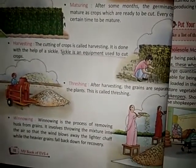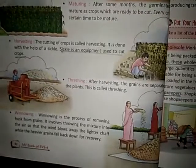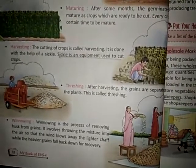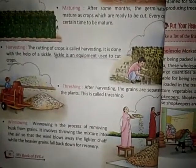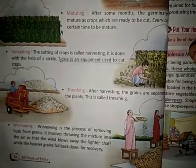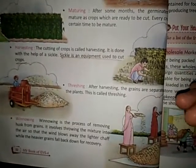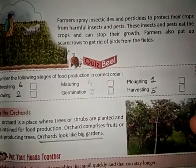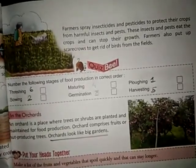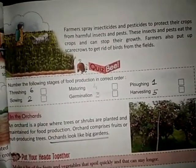Sixth is threshing. After harvesting, the grains are separated from the plants, and this is called threshing. Seventh process is winnowing. Winnowing is the process of removing husk from grain. It involves throwing the mixture into the air so that the wind blows away the lighter part while the heavier grain falls back down for recovery. Farmers spray insecticides and pesticides to protect their crops from harmful insects and pests. Farmers also put up scarecrows to get rid of birds from the field.